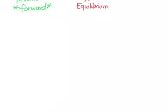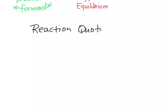The way that we can compare or determine how a reaction must move to reach equilibrium is using something called the reaction quotient, and this is the letter Q.